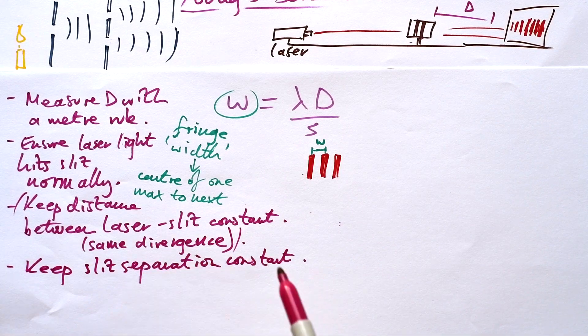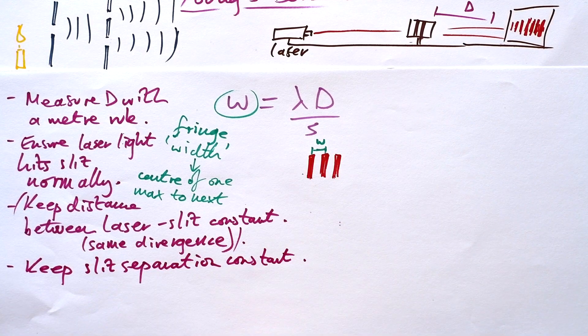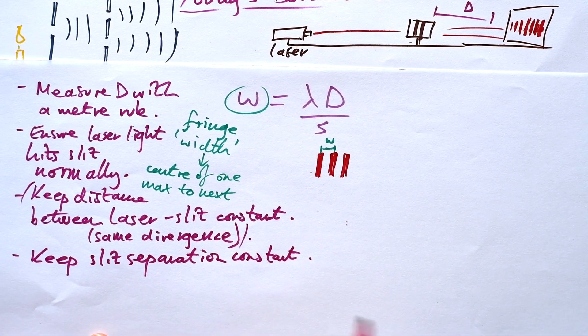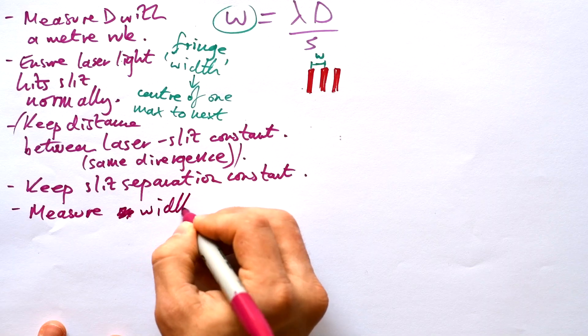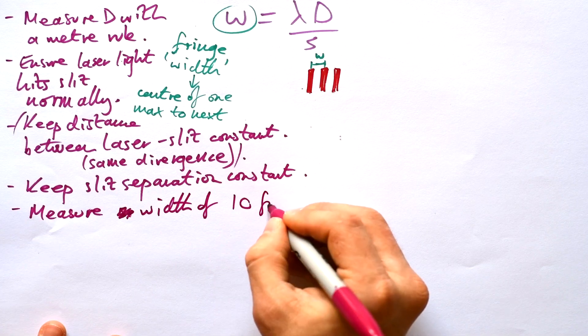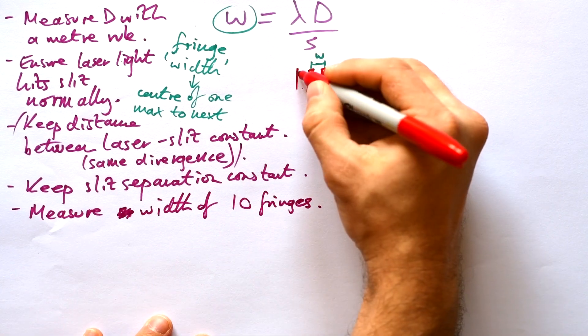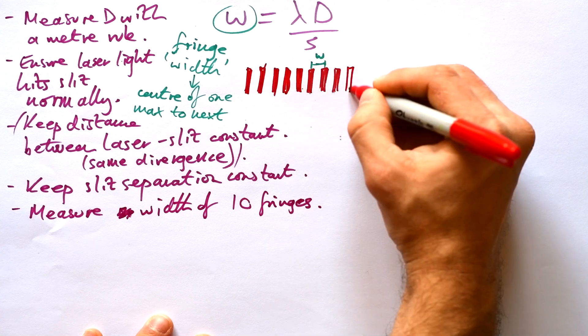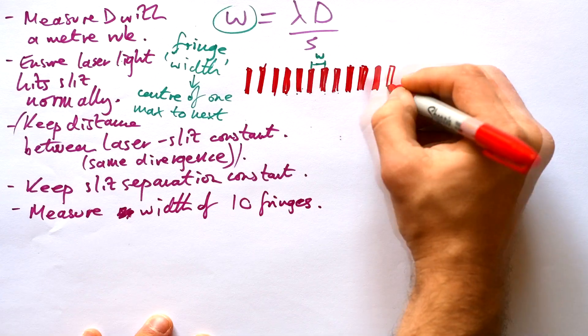Keep slit separation the same and we're not going to measure that because it's probably going to be written on the slide. And then we get on to measuring the fringes. We're going to measure the width of 10 fringes. So we're not just going to measure one because of course these are going to be quite close together. We're going to end up with an imprecise value if we do that.